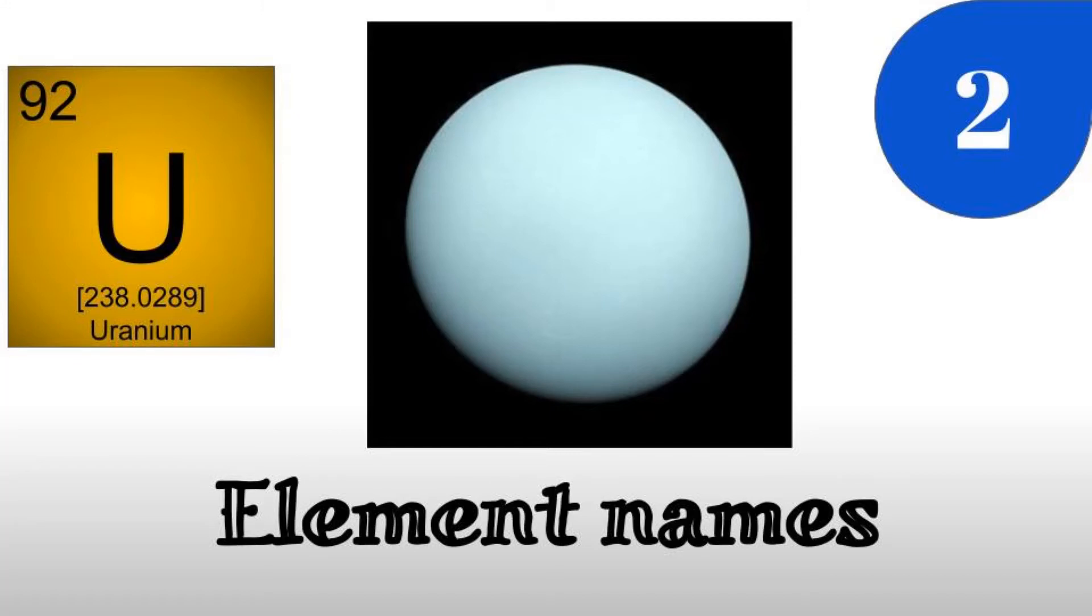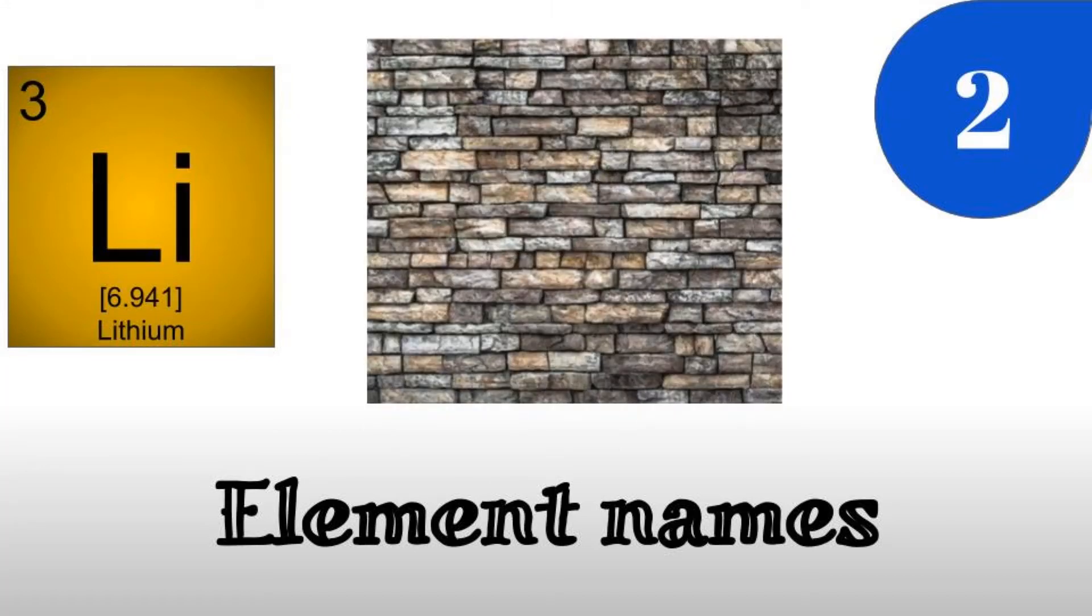Elements can also be named after a mineral or similar object, like lithium was. The name comes from the Greek word lithos, meaning stone. This is because lithium was discovered in a solid object, like stone, instead of plant tissue like elements discovered around the same time were.